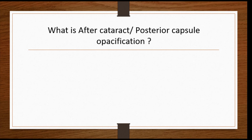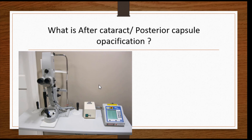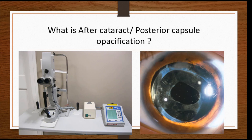Posterior capsular opacification (PCO) — after cataract surgery, patients commonly complain of a sudden decrease in vision. The most common reason is PCO: the posterior capsule becomes white, as seen in a slit lamp image, causing decreased vision. We have a laser machine for this — we make a small opening in the center of the posterior capsule. It is an OPD procedure that takes only a minute or two, and the patient regains good vision afterwards.